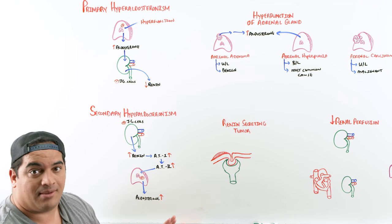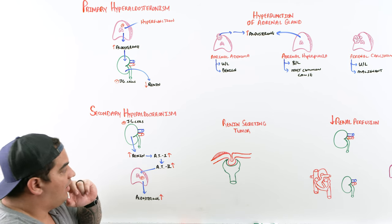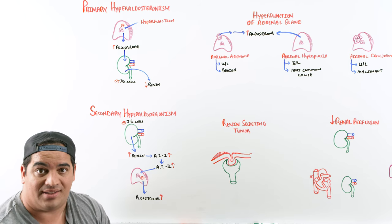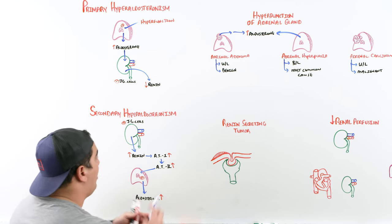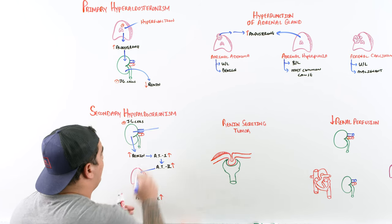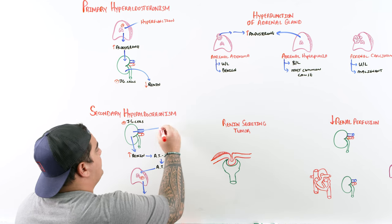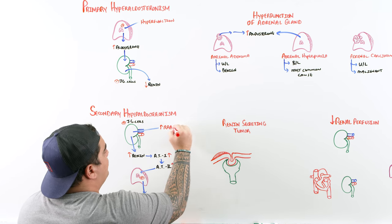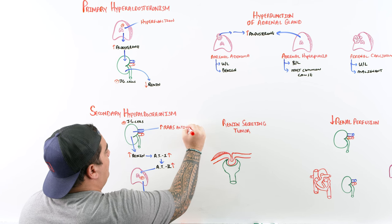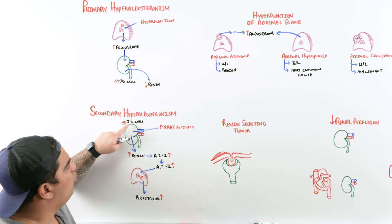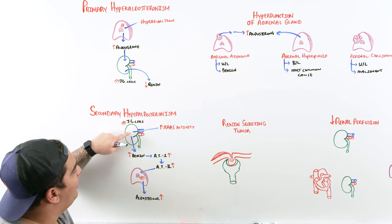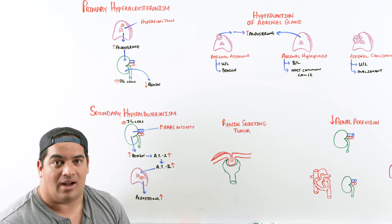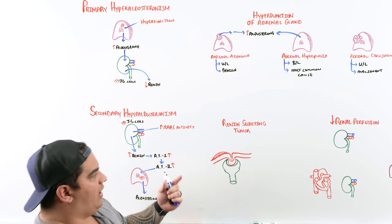We need to ask ourselves why the JG cells are hyperactive and increasing this renin-angiotensin-aldosterone system. There is an increase in renin-angiotensin-aldosterone system activity, and one reason is either a tumor of the JG cells or poor perfusion to the kidney leading to very high renin production.